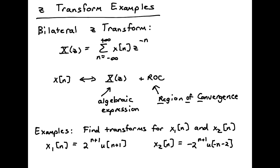Hello and welcome to a DSP video that considers several Z-transform examples. We're working with the bilateral Z-transform, which is defined as an infinite summation. It takes a sequence x of n and translates it into an algebraic expression for x of z and an associated region of convergence where the summation converges.